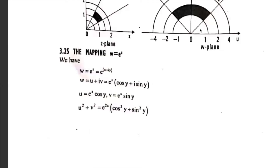The mapping w = e^z, we have w = f(z) = e^(x+iy), and we know that w = u + iv, which equals e^x · e^(iy). Since e^(iθ) = cos θ + i sin θ, the real part of f(z) is e^x · cos y, and the imaginary part of f(z) is e^x · sin y.